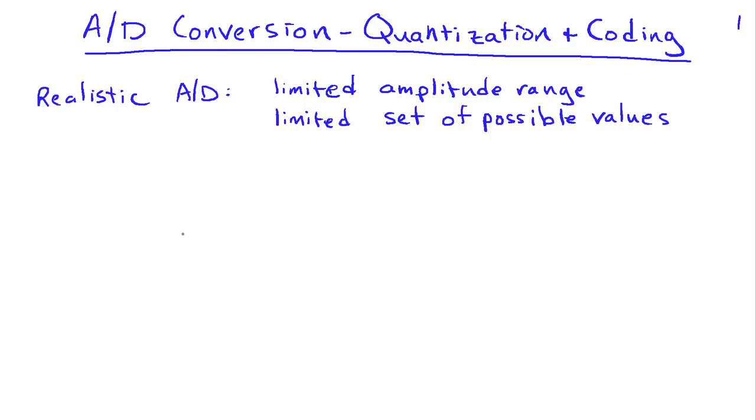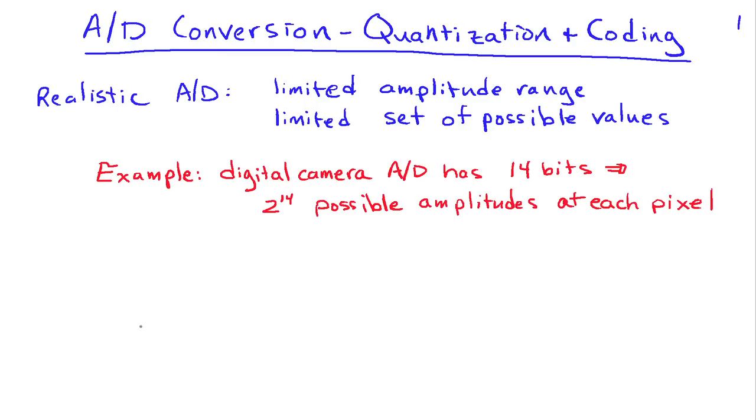As an example, I have a digital camera and the analog to digital converter in my digital camera has 14 bits of resolution. This means that the color associated with a particular pixel can take on 2 raised to the 14th power possible amplitude values.